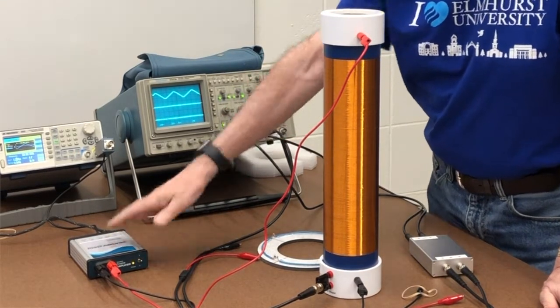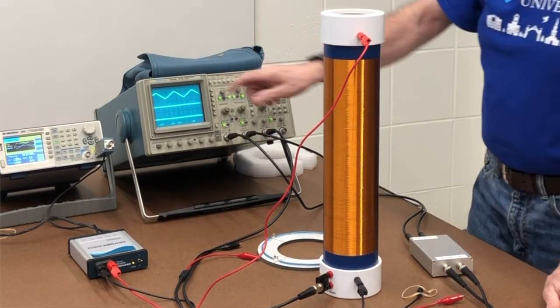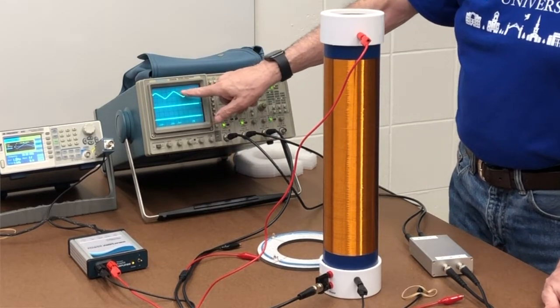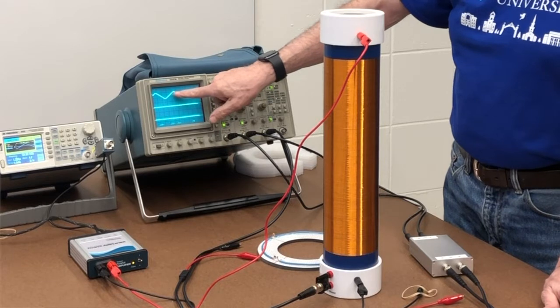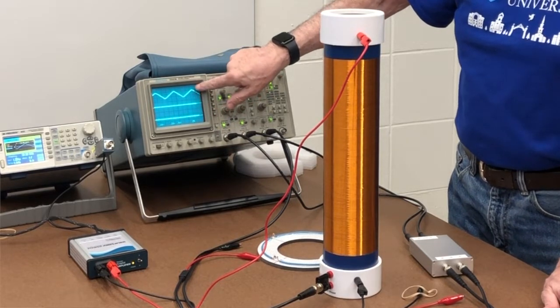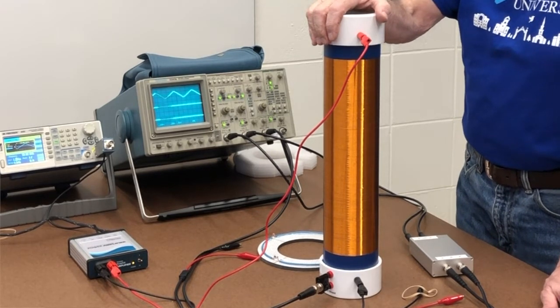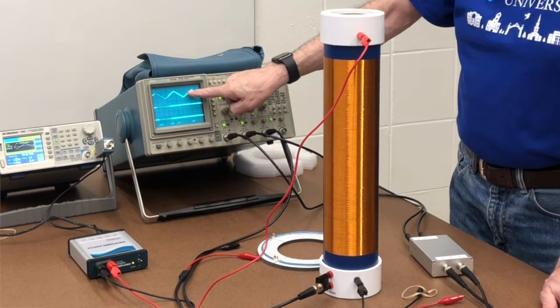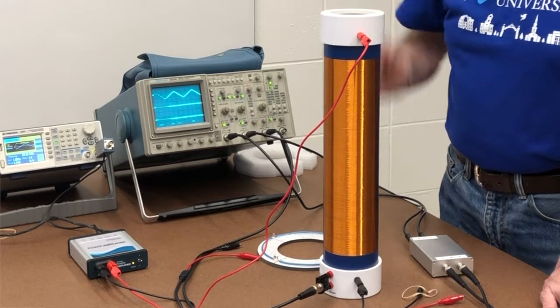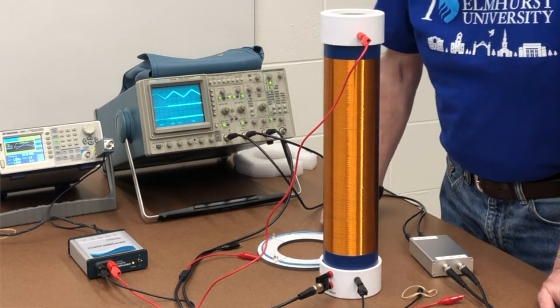what you see on the scope is a sawtooth pattern that is the triangle wave of the current going through this coil. This also represents the B field that's changing in the coil.